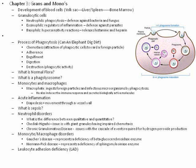Macrophages ingest foreign particles and infectious microorganisms by phagocytosis, just as neutrophils do. They also induce an immune response and secrete biologically active molecules so the body can make antibodies against foreign items. With acute inflammation, diapedesis happens — cells come out of the vessels and move through tissues into the site of infection. Sepsis is what happens when the body has an overwhelming amount of inflammation and infection, usually because of an overwhelming blood infection.